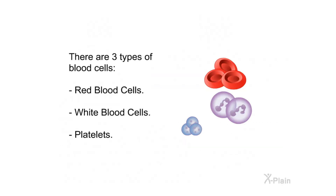There are three types of blood cells: red blood cells, white blood cells, and platelets.